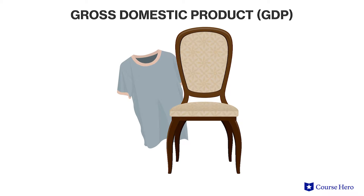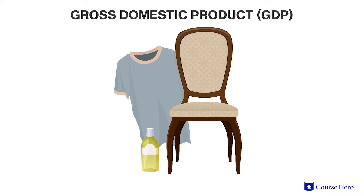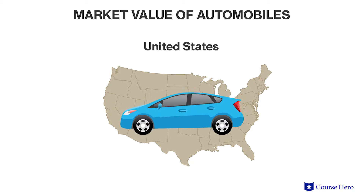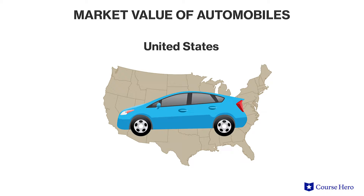GDP measures goods and services produced within a country's borders without regard for the ownership of the factors of production. For example, the market value of automobiles manufactured by Toyota in the United States would be counted in the United States GDP even though Toyota is a Japanese-owned company.